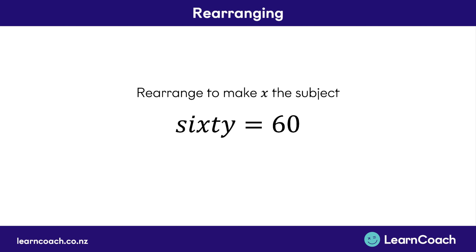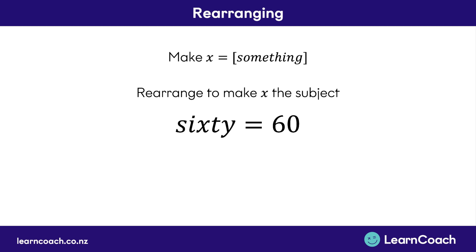You might get given an equation that looks something like this. Rearrange to make X the subject — you might get given some kind of expression like SI times X times TY equals 60. When the question says make X the subject, what that really means is we need to make X equal something. We don't have X equals on its own; we've still got SI and TY next to the X. So what we need to do is get rid of SI and TY, and all we'd be left with is X equals 60.